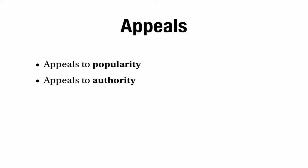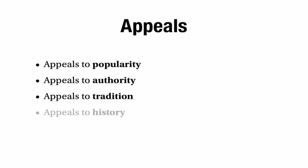This is one of a sequence of videos to help with AS level critical thinking, and this video is going to be all about appeals. There are several types of appeal that you're expected to know about: appeals to popularity, appeals to authority, appeals to tradition, appeals to history, and appeals to emotion. I'll go through these one at a time.